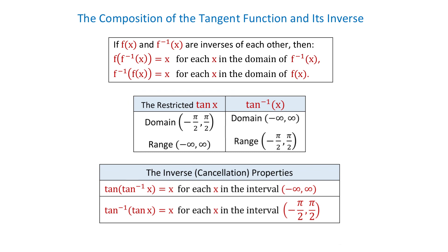The first property is: tangent of inverse tangent of x equals x, for each x in the interval from negative infinity to positive infinity. The second property is: inverse tangent of tangent of x equals x, for each x in the interval between negative pi over 2 and positive pi over 2. So in the first property, x can be any number, but in the second property, x has to be a number between negative pi over 2 and positive pi over 2.